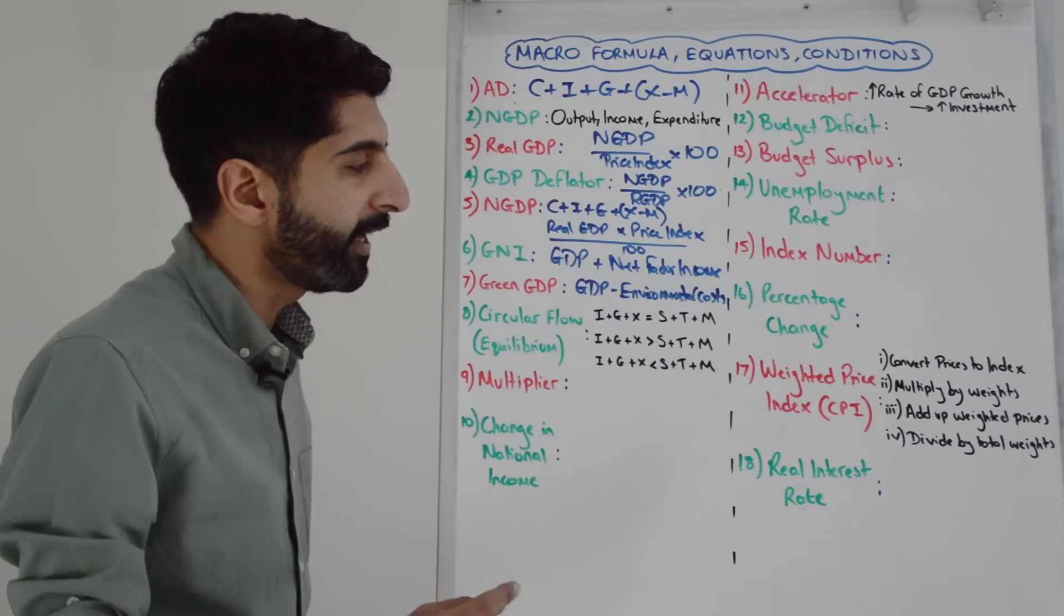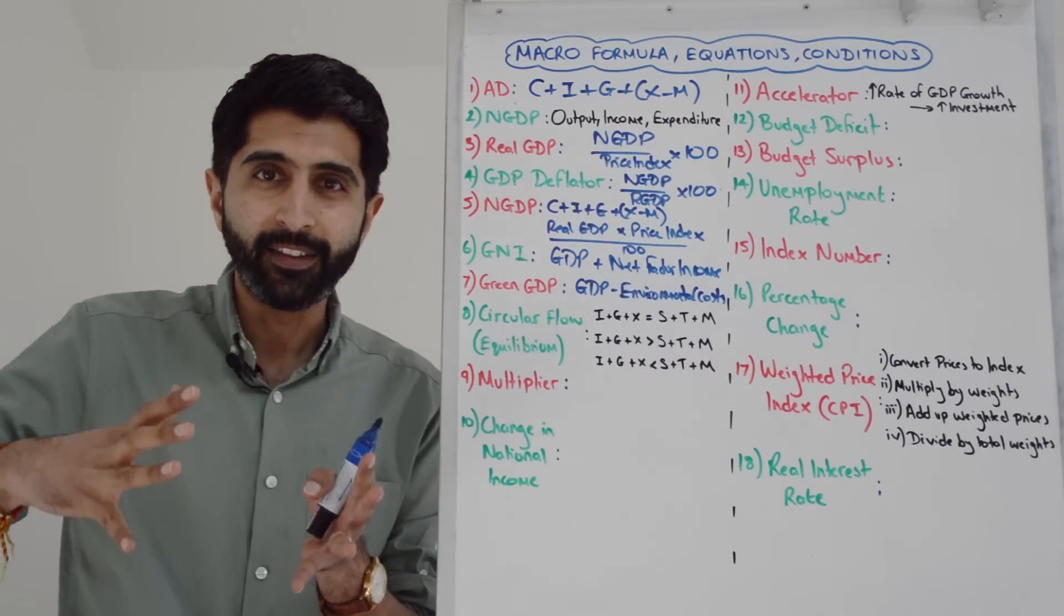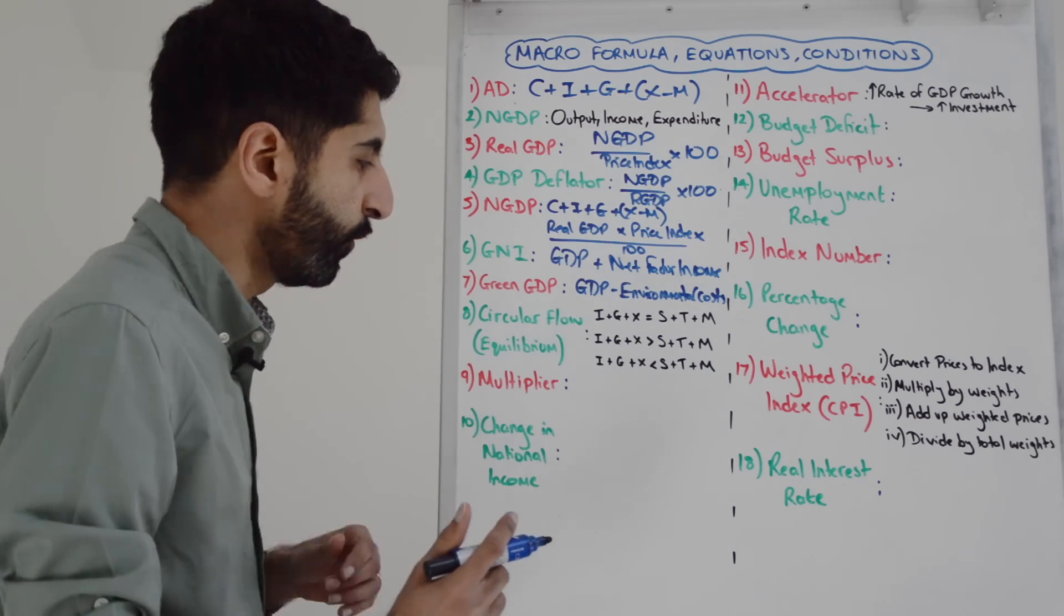If injections are greater than leakages, that's economic growth in an economy. If injections are less than leakages, this is negative growth - an economy that's shrinking.